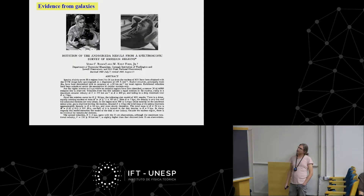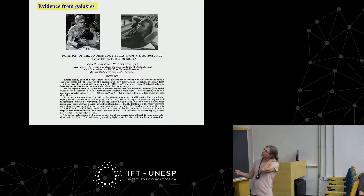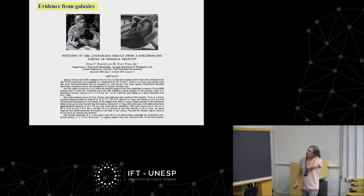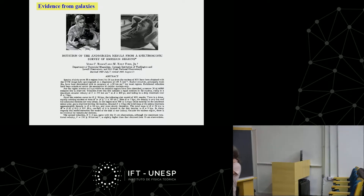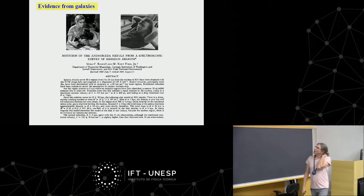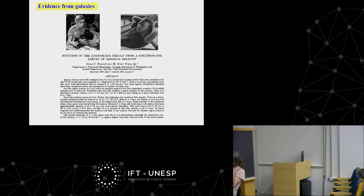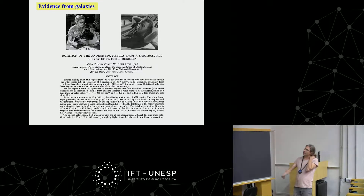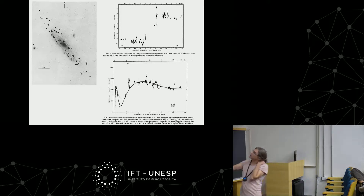There is also evidence for dark matter from galaxies. One of the most solid pieces of evidence — there were earlier ones from the 1930s by John Babcock — was the paper published by Rubin and Ford at the end of the 1960s. Ken Ford designed the spectrometer, and Rubin used it to measure the spectra of 67 ionized hydrogen regions in M31 at different distances from the center of the Andromeda galaxy.